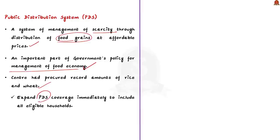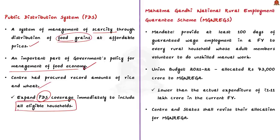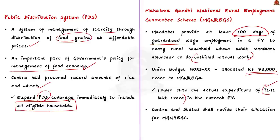The government should expand the PDS coverage immediately to include all eligible households. Last year, the centre procured record amounts of rice and wheat, well above current PDS requirements. Regarding MGNREGA, its mandate is to provide at least 100 days of guaranteed wage employment in a financial year to every rural household whose adult members volunteer for unskilled manual work. The Union Budget 2021-22 allocated Rs. 73,000 crores to MGNREGA — substantially lower than the actual expenditure of Rs. 1.11 lakh crores in 2020. The centre and states should revise their allocation for MGNREGA at least until the economy revives.